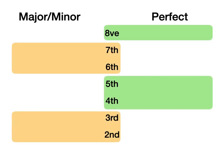Let's have a look at this table. On the left-hand side, you can see that the intervals of a second, third, sixth and seventh are major or minor. And on the right, the intervals of a fourth, fifth or octave are perfect.